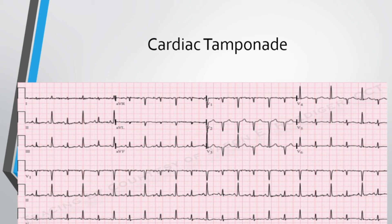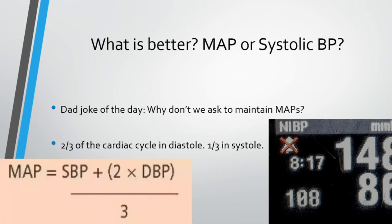So what is better — MAP or systolic blood pressure? You should have picked up that MAP is superior. Focus on a MAP of 65 mmHg or greater to adequately perfuse your organs. Going back to the earlier example, the patient with the higher systolic was not perfusing as well as the one with a lower systolic but higher diastolic. You can use the formula at the bottom of the screen to calculate MAP, or just read the number displayed on your monitor.